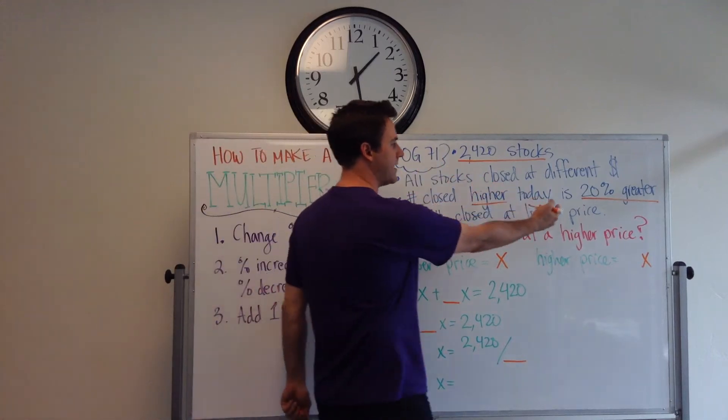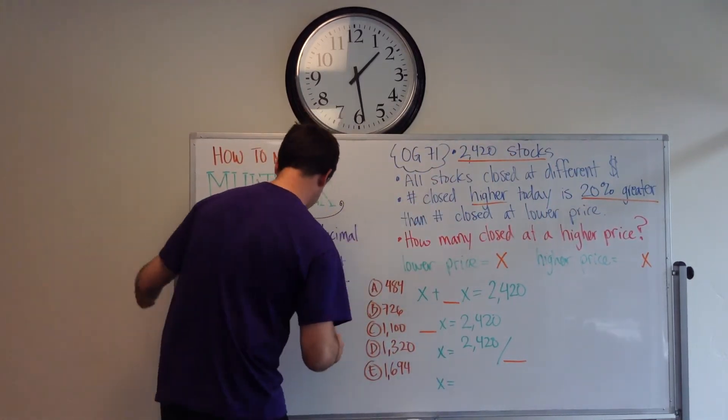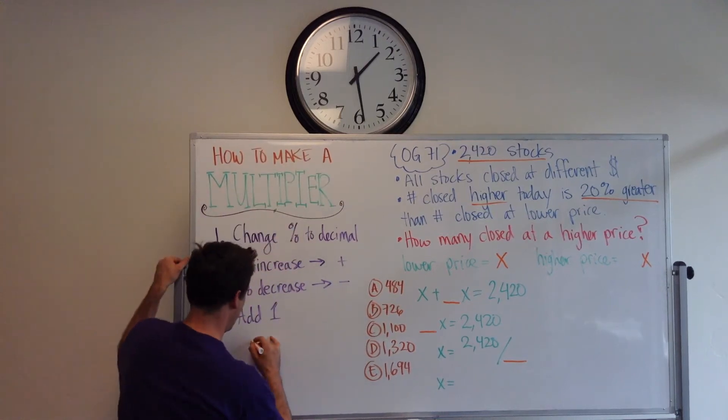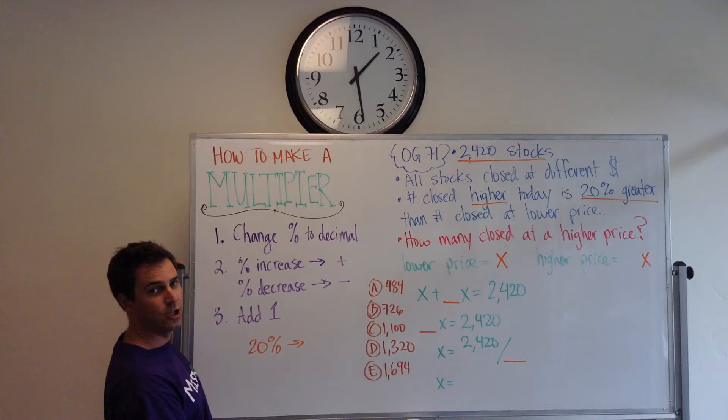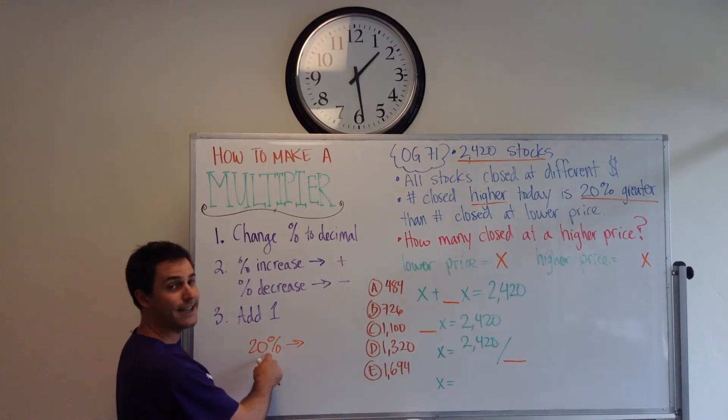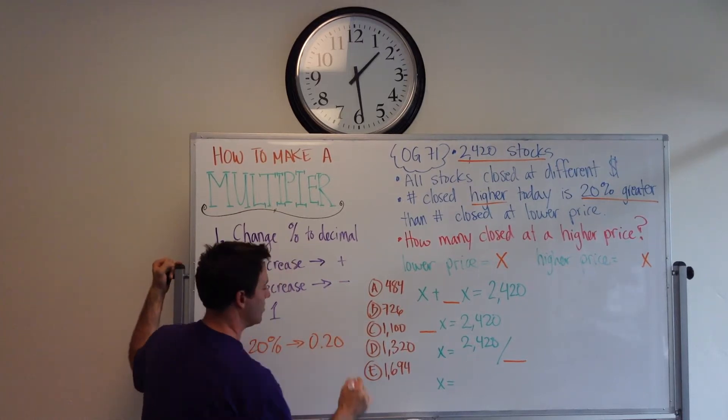So, what do we do? We change our percent to a decimal. We have 20% greater. 20%. How do we change that into a decimal? We're going to move our decimal point and drop the percent sign. So, this becomes 0.20. Okay, we got a decimal.